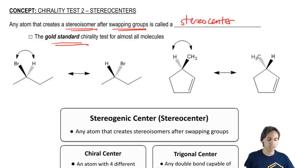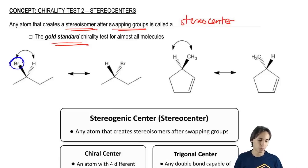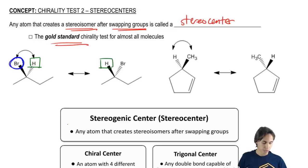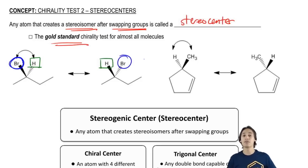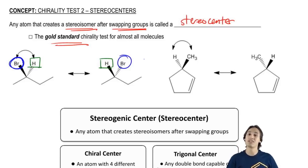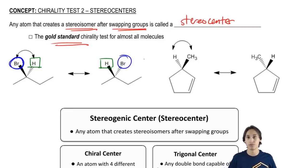Here I've given you two different examples. In this first example, I had a bromine in the front and then I swapped it with an H in the back. What we'll notice is that now the H is in the front and the bromine is in the back. This is a type of stereocenter because after I inverted these two groups, I didn't get the same exact molecule — in one, the bromine is in the front; in the other, the bromine is in the back. Since there's no plane of symmetry, those are actually different molecules.